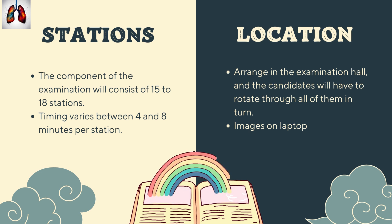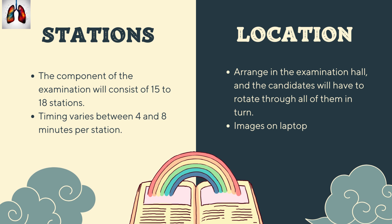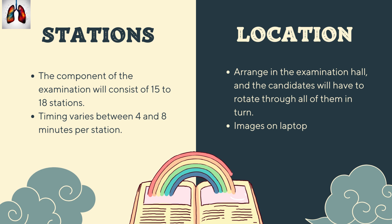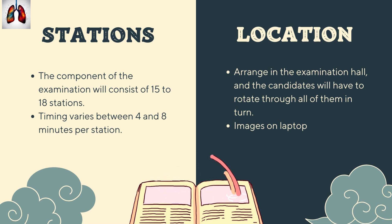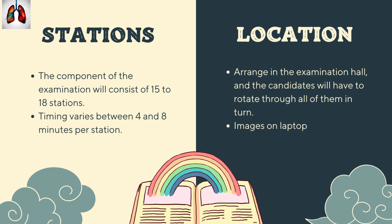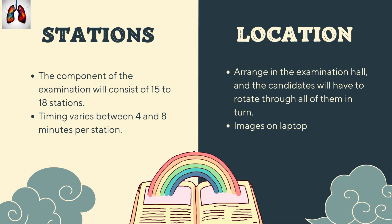The examination generally consists of 15 to 18 stations, and the timing varies between four to eight minutes per station. This can vary, but on the day of the examination they will tell you the stations and the time per station. It is usually arranged in a CPSP examination hall where candidates rotate through all stations in turn, and the images are usually displayed on a laptop.